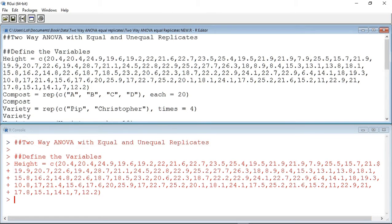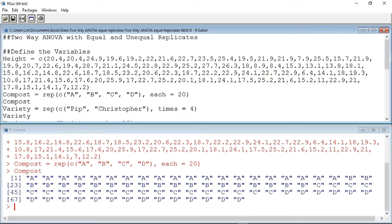The compost variable too requires 80 components. But in order to make us more accurate and save us time, I'm going to use the rep command. Here, you can see I have the compost types A, B, C, and D, and the each attribute tells the program that it needs to place these 20 times in the compost variable. This is how the variable now looks: 20 As followed by 20 Bs, 20 Cs, and 20 Ds.